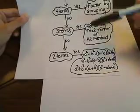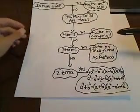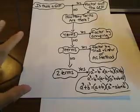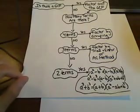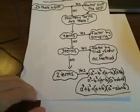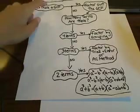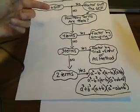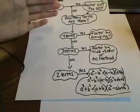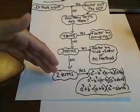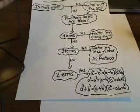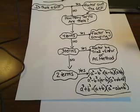What you want to do is you want to use this to help organize your thinking as you're going through and working these problems. So you always want to start by asking yourself the question: is there a greatest common factor? And then you go on from there. Depending on how many terms is going to determine the process that you use in order to factor.